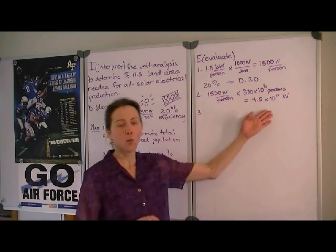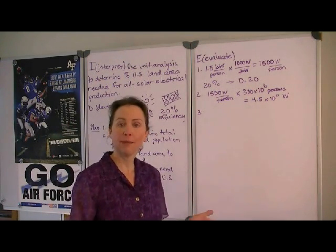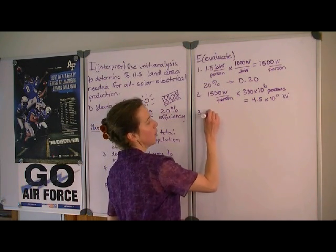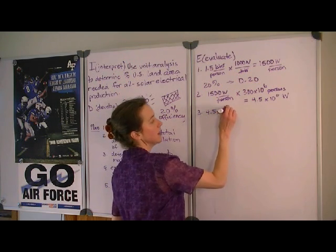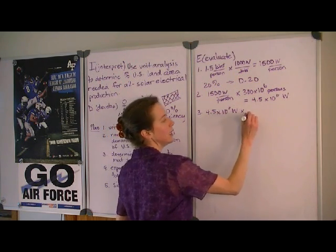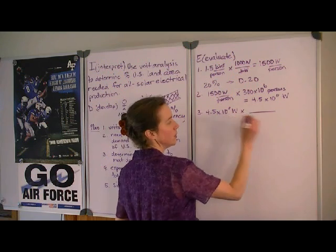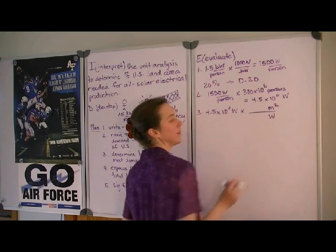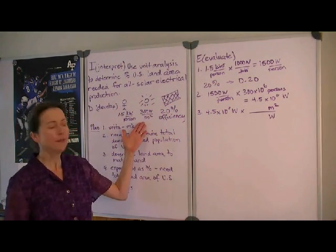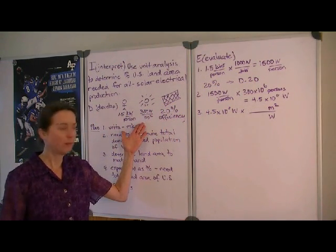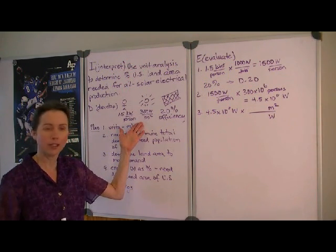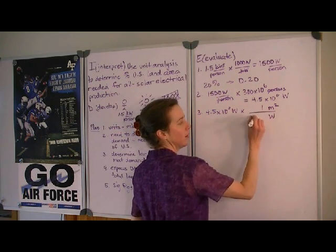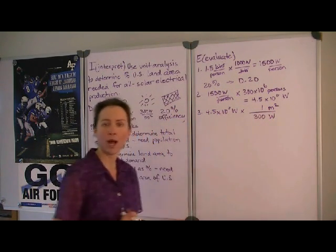Now if we want to get from watts to how many meters of total area that we need for production, we're going to multiply 4.5 times 10 to the 11th watts. And we're going to need some way to divide out watts and to be left with an area. Now we were given the rate of energy production, or the rate that the sun is delivering electrical energy to the earth. And that was, for each meter squared, the sun is delivering 300 watts.